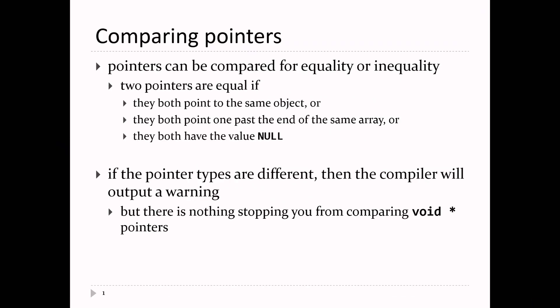The next topic is arrays and pointers. Pointers can be compared — a pointer in C stores the memory address of an object, so it points somewhere in memory. You can do arithmetic with pointers and compare them for equality or inequality. Writing P == P2 asks: do both pointers point to the same object?